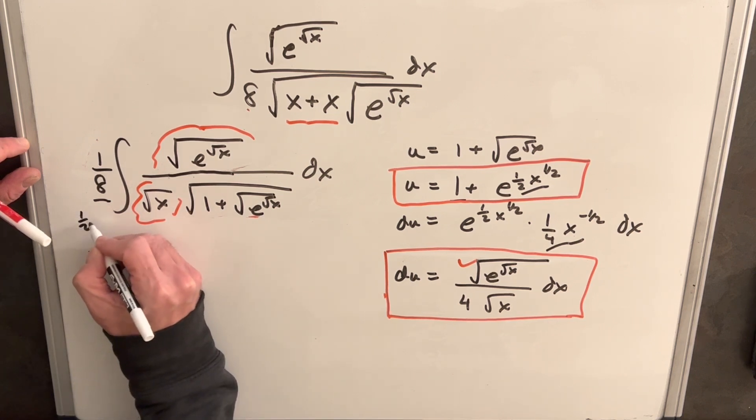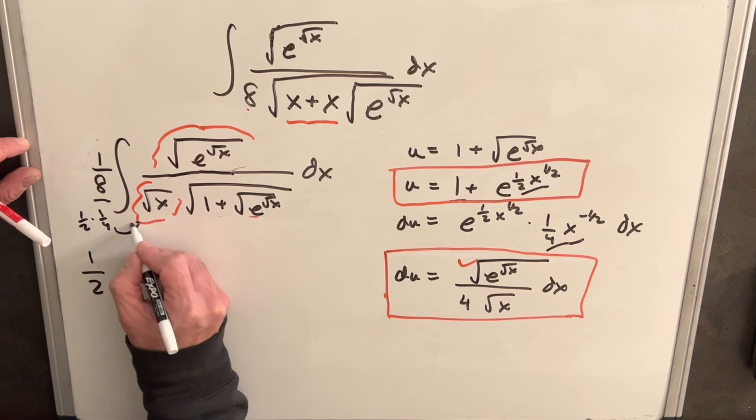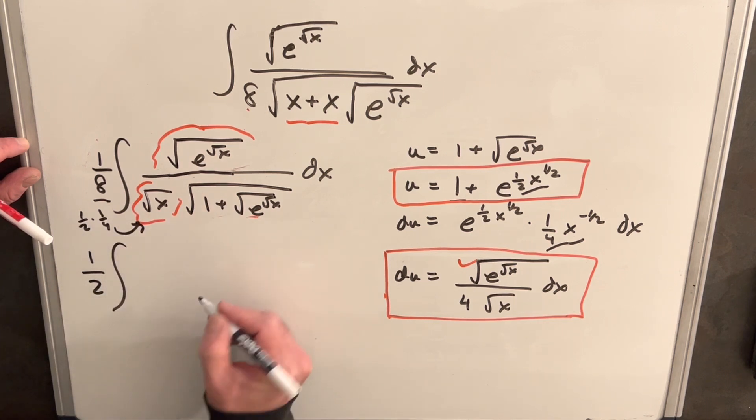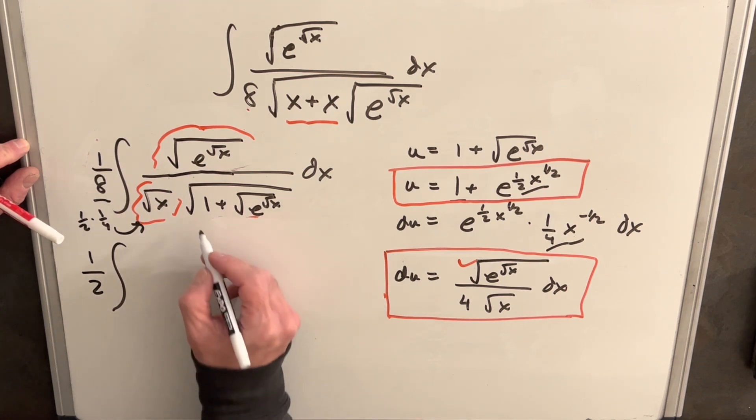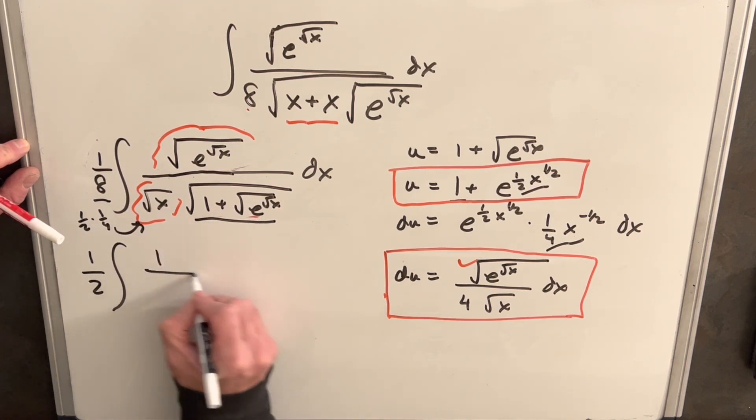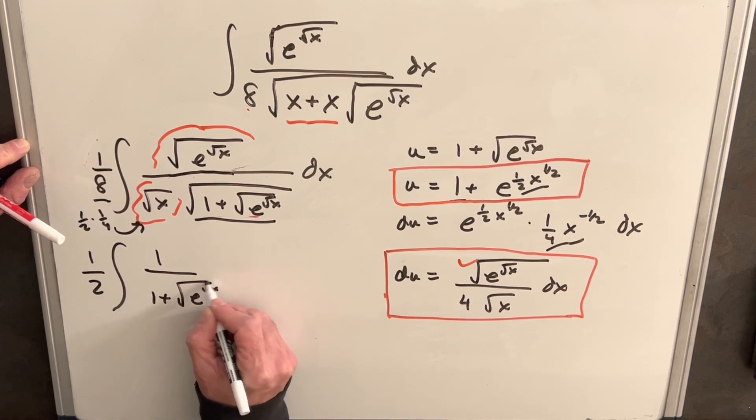I'm going to write 1 half in front. We'll write it as, we'll write this as 1 half times 1 fourth, and we'll bring the 1 fourth in. I just like to do this to organize my du so I know it's going to work right. So then we'll just keep this piece, so we'll have 1 over 1 plus square root of e square root of x, all in a square root.